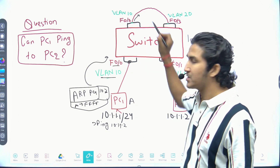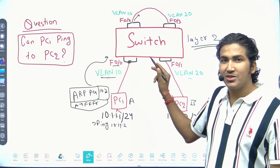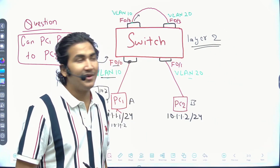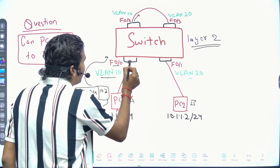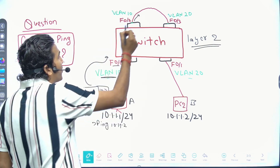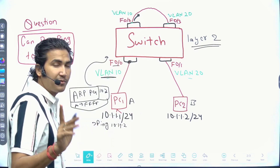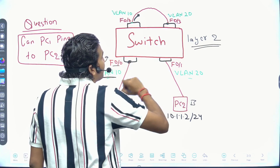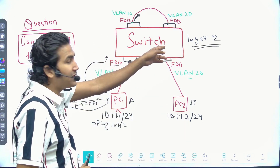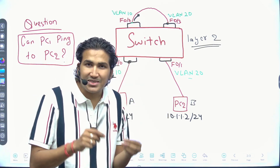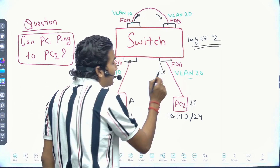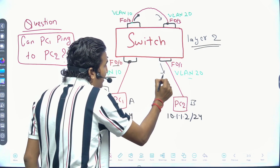The same switch is now receiving the ARP request on port 0/3, which is a member of VLAN 20. Since the receiving interface is part of VLAN 20, the switch will forward the broadcast from all VLAN 20 interfaces. So it receives on 0/3 and forwards from interface 0/1, which connects to PC2.